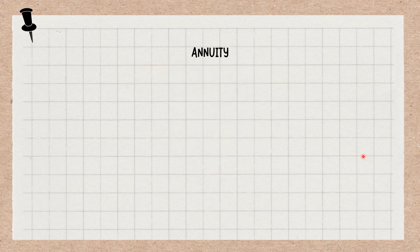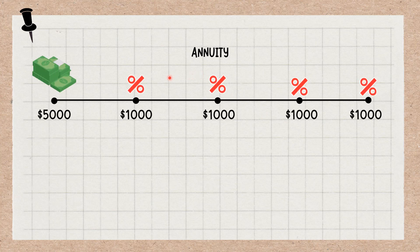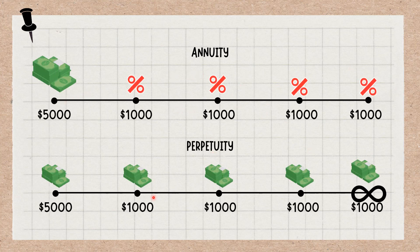Understanding Perpetuity. An annuity is a stream of cash flows. A perpetuity is a type of annuity that lasts forever — the stream of cash flows continues for an infinite amount of time.